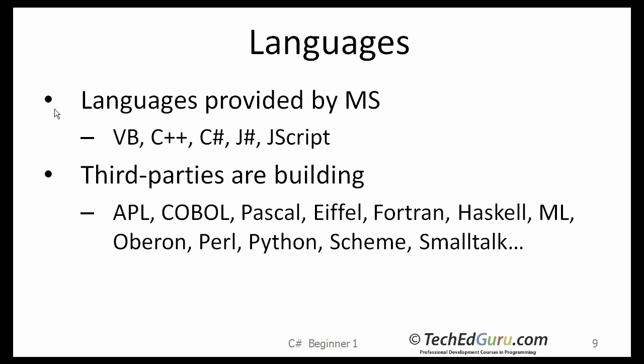The languages supported by .NET are Visual Basic, C++, C-Sharp, J-Sharp, and JScript. There are also several third-party languages available — for example, one in Fortran, one based on Python, one based on COBOL, and one based on Smalltalk. So you may be able to find the language that you like and program on the .NET platform.